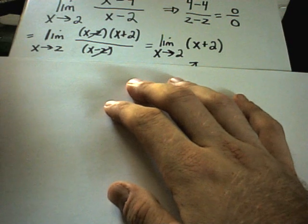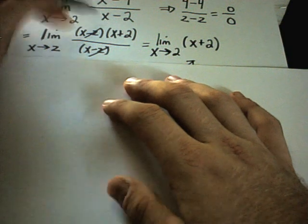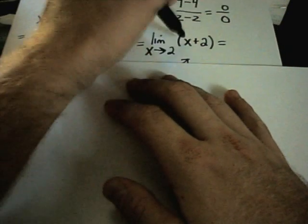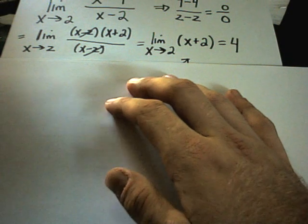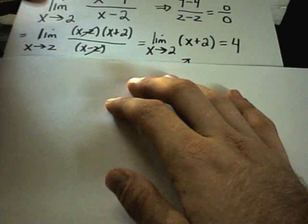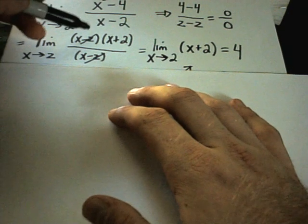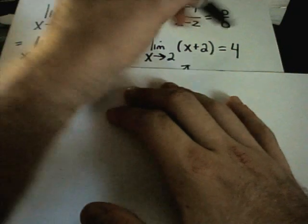And in this case, if I plug in x equals 2, I'm no longer dividing by 0. I'll get 2 plus 2, or 4. And that's the answer to my limit. It says the limit as x approaches 2 of x squared minus 4 over x minus 2 is going to equal 4.